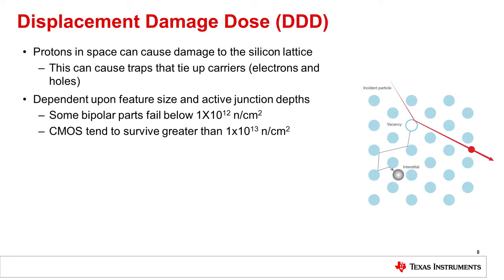Now I want to move on to another dose-dependent effect: displacement damage, which is created when protons strike a silicon atom and knock it out of place. This causes traps in the silicon, which can tie up carriers and lead to increased leakage. A device's susceptibility to displacement damage is dependent upon the device's silicon feature size, active junction depths, and process technology. Some bipolar parts are very sensitive to displacement damage and can fail when they see proton strikes of 10 to the 12th protons per square centimeter or less, while CMOS parts tend to survive much greater fluences — sometimes 10 to the 13th protons per centimeter squared or more.